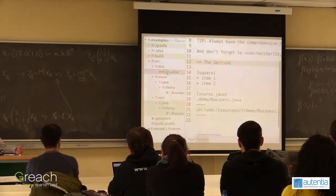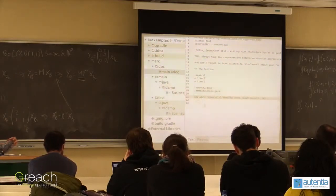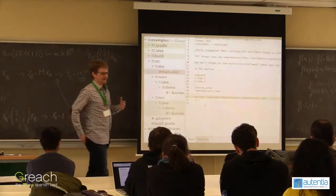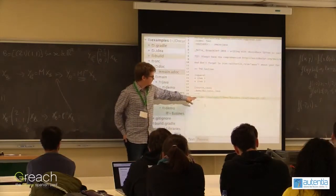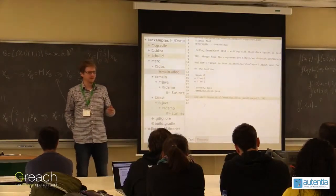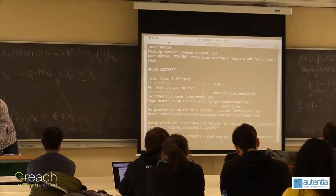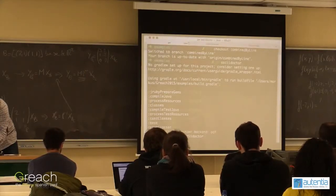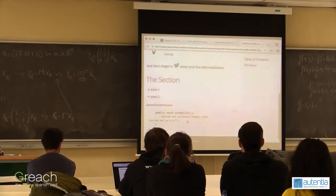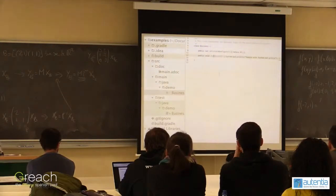In the AsciiDoctor source, where I had a code snippet before, I now don't have code hardcoded in the AsciiDoc file anymore. Instead, I reference my Java source file and include the snippet directly. I can specify the lines of the method I want to include. And the outcome is that we have just the actual method from our business class rendered in our documentation.